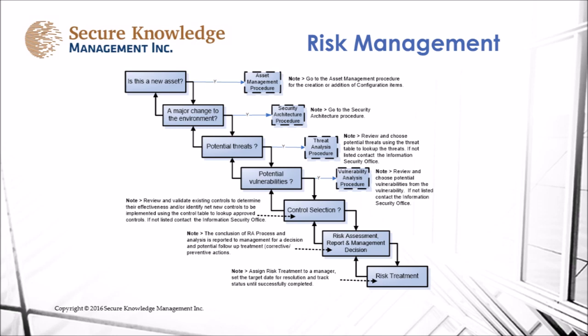Risk management is fundamentally important to the success of adopting the NIST Cybersecurity Framework. On this slide we describe a seven-step process. In step 1 we evaluate whether or not we're looking at an asset and whether that asset has been registered in a database. Step 2 we determine if it's a major change to the organization, its infrastructure, and determine whether appropriate topologies and network diagrams have been updated.